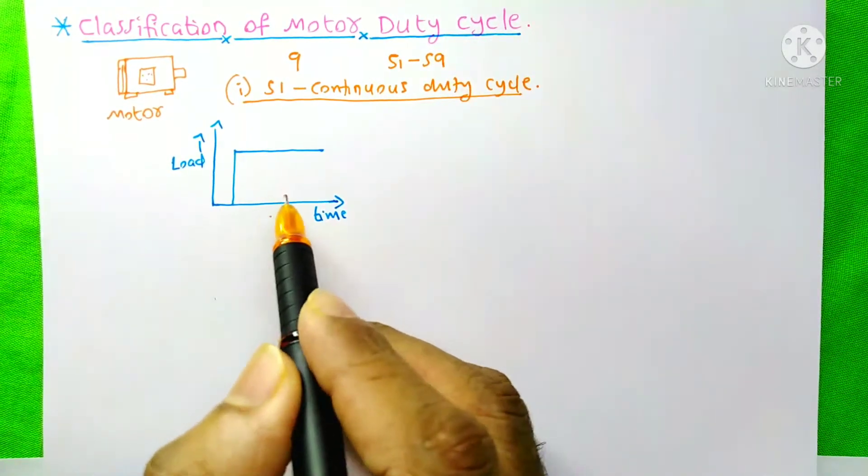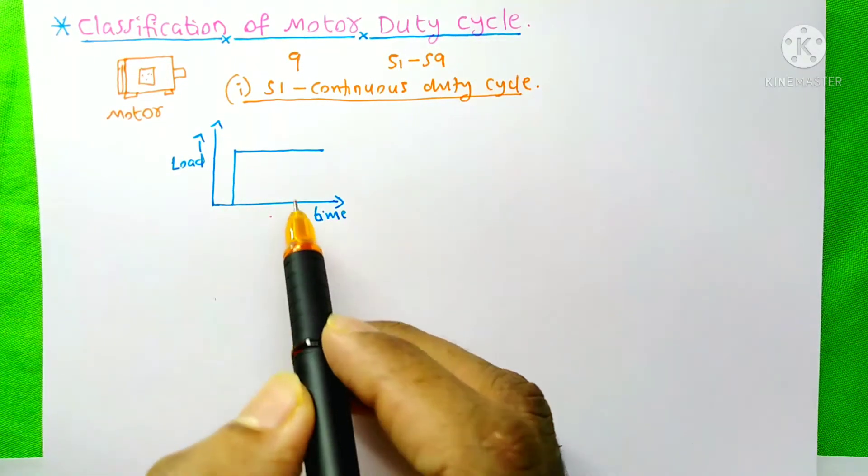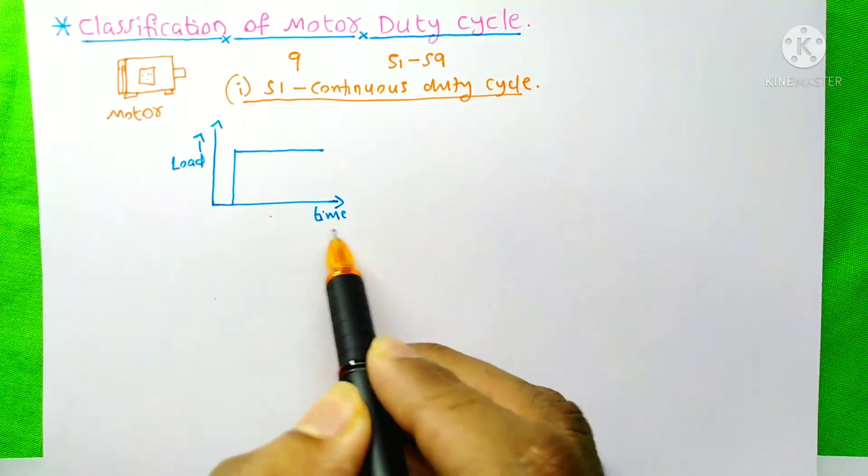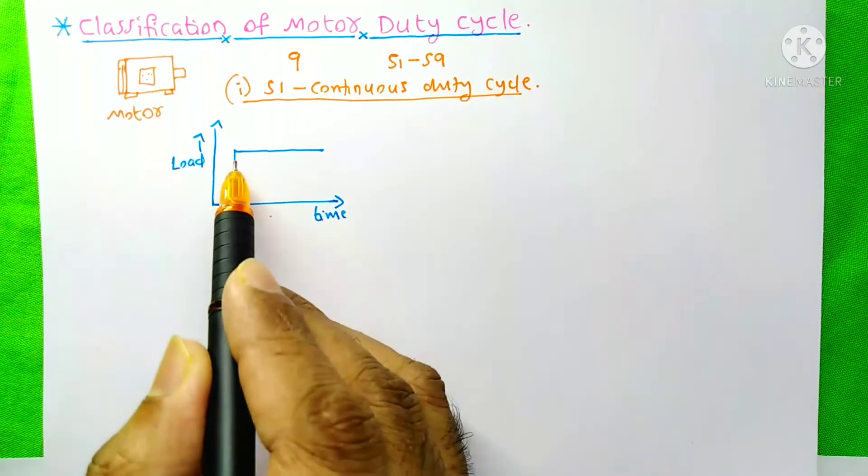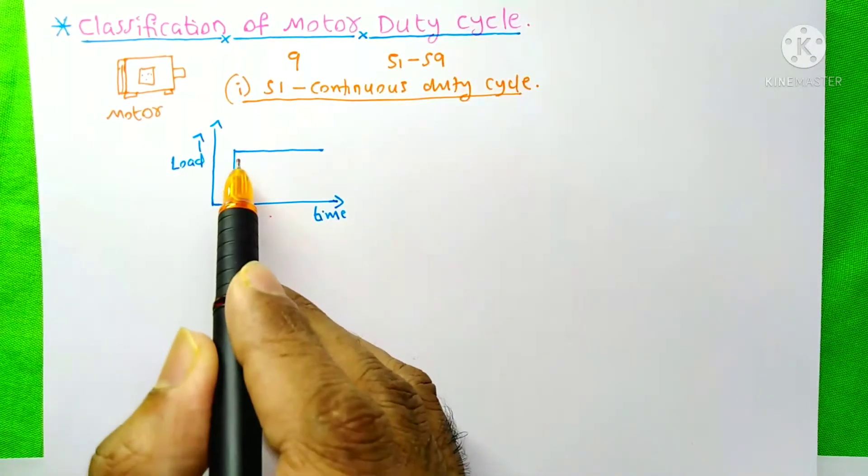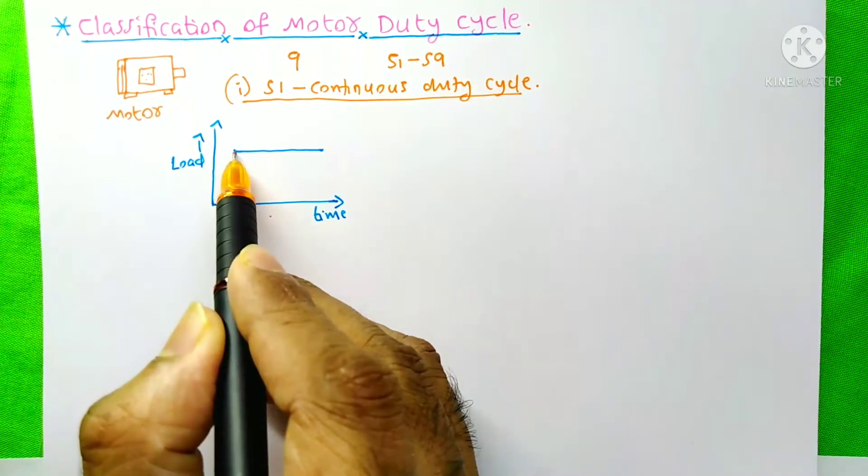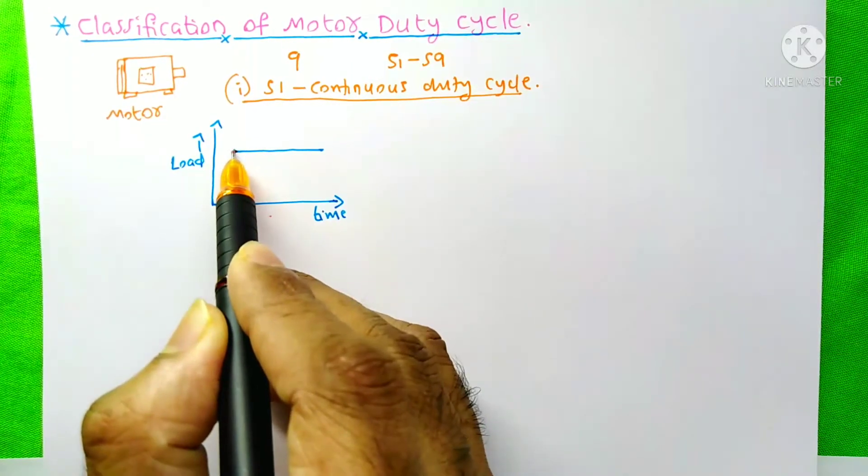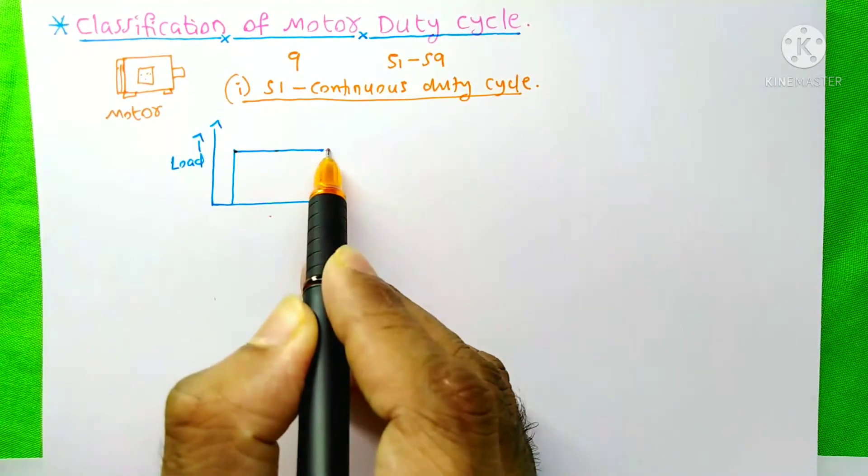It is the graph of continuous duty cycle. Here is the load and it is the time. After the motor starting, the motor reaches its maximum load at this point. And after that, the load is constant for all time.